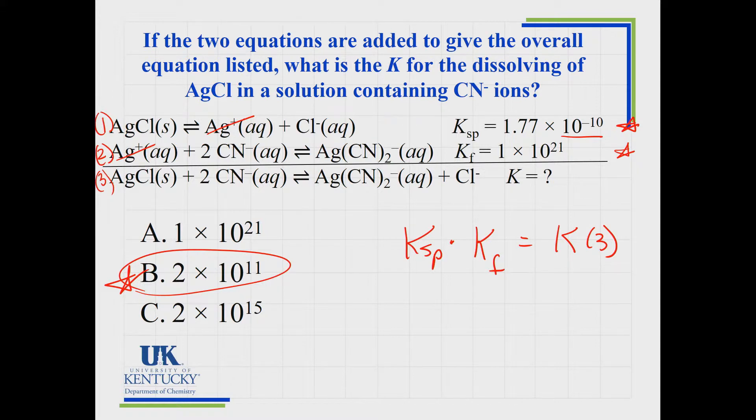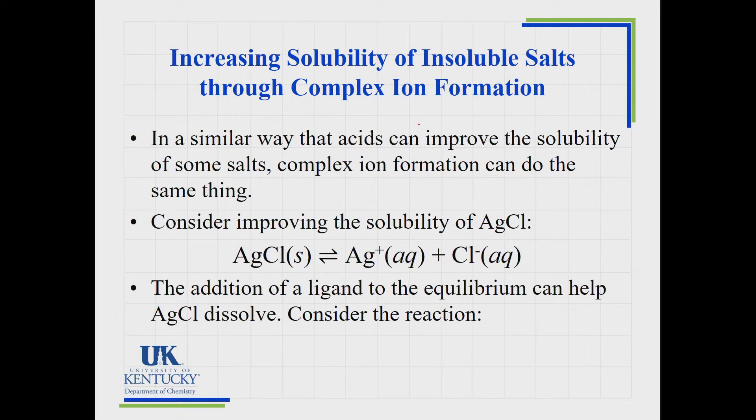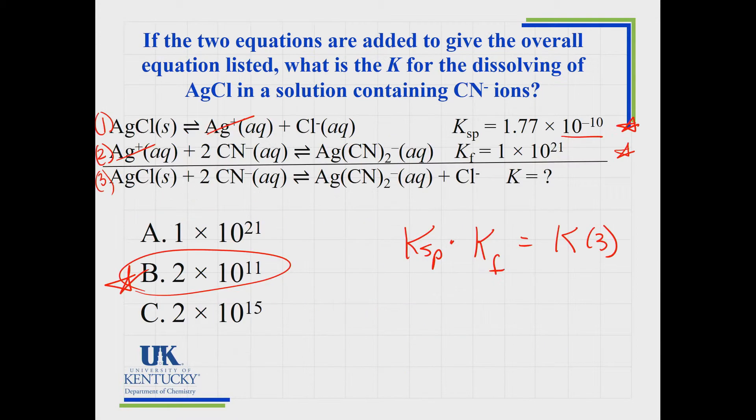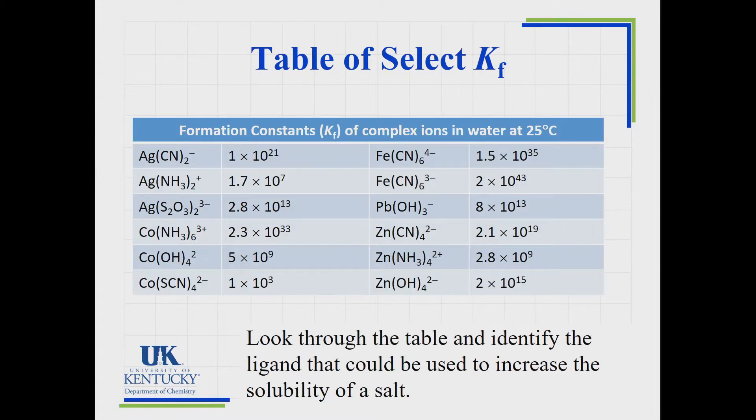You can take an insoluble salt, like reaction 1. You can add a ligand that will bind to the dissolved silver ions and make something that wasn't very soluble become quite soluble. Now, when it's dissolving a lot of it, it's going really far to the right because of the magnitude of that K value. So this is a good way to do this.